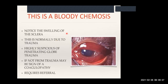The second one is called a bloody chemosis - notice how the sclera is swollen. This is normally due to trauma and is highly suspicious of a penetrating injury - something's penetrated the globe and is now bleeding between the cell layers. If it's not from trauma, it's a sign of a coagulopathy. Note the differences: it's not flat - it's raised; it's not bright - it's dull; it tends to be circumferential but can encompass just one section. It always requires referral.